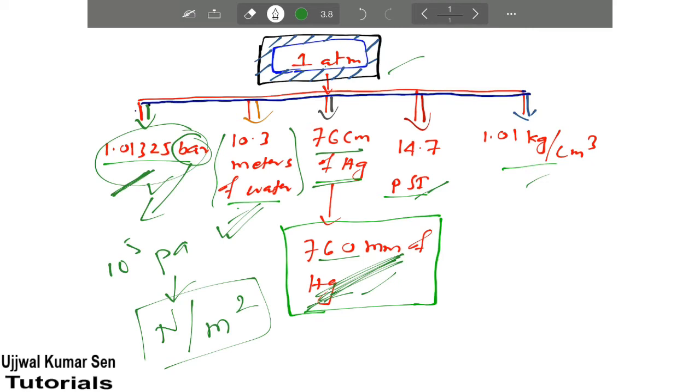Now next, what is that? 14.7 psi. Psi means pound per square inch.